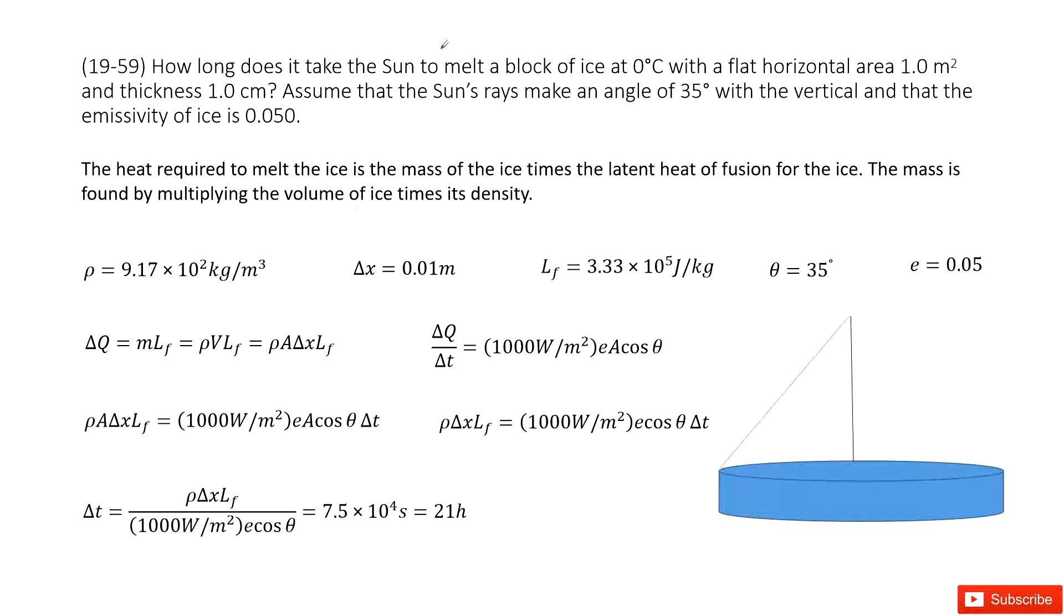We can see we have the sun to melt a block of ice. We know this ice's surface and the depth is given there: delta L equals 0.01 meters and 1 meter squared area. We consider this sun ray makes the angle 35 degrees, theta equals 35 degrees with vertical. And the emission constant is given. So how long it takes for the sun ray to melt this ice?